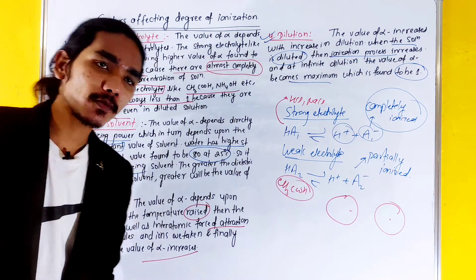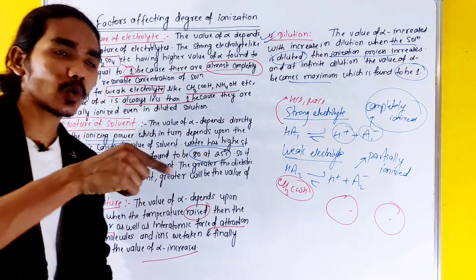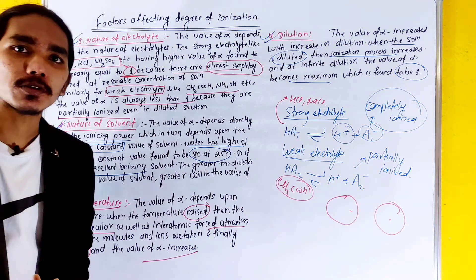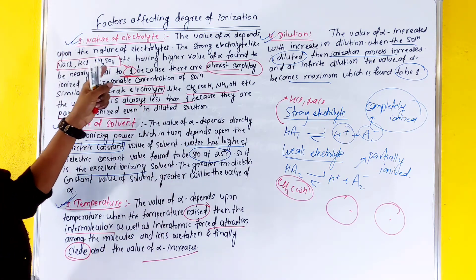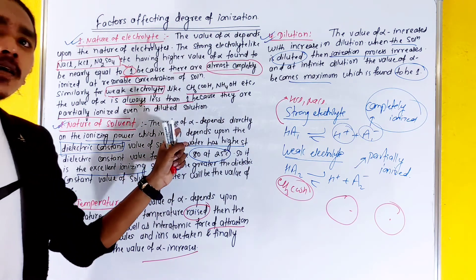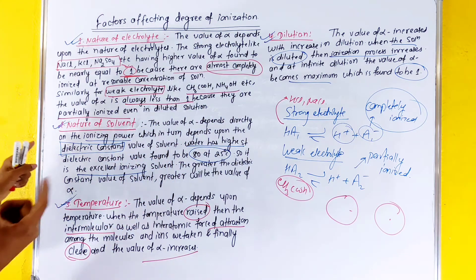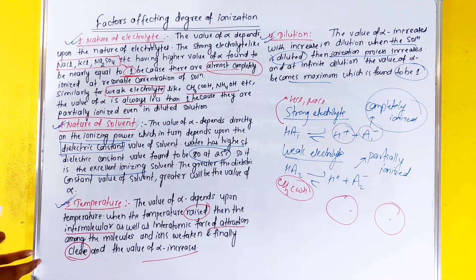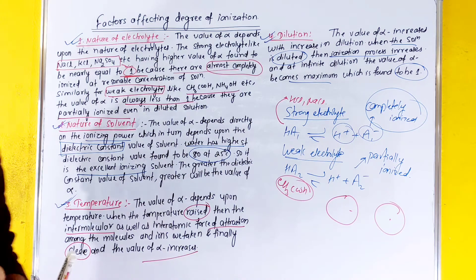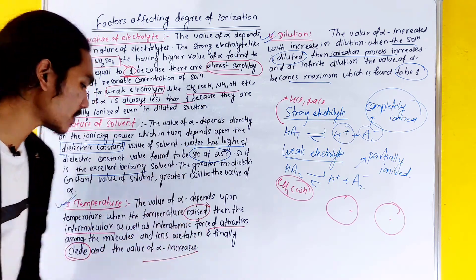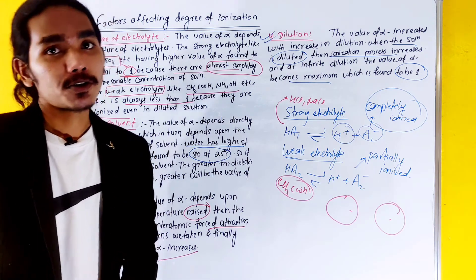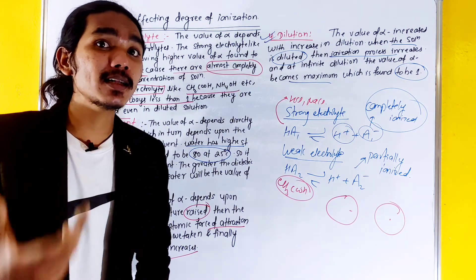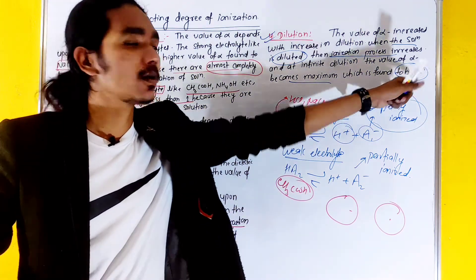The nature of electrolyte — strong or weak — determines whether alpha is nearly one or less than one. Strong electrolytes are completely ionized; weak electrolytes are partially ionized. The nature of the solvent depends on its dielectric constant. Temperature affects interatomic force attraction, causing molecular bond cleavage and increasing alpha. If dilution is increased, alpha value increases, and at infinite dilution it is nearly equal to one.